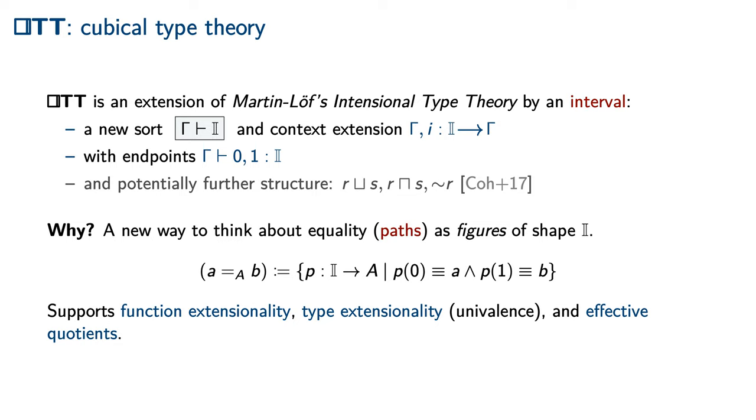Unlike Extensional Type Theory, however, Cubical Type Theory supports an additional extensionality principle for the universe of types itself. In particular, two types are identified by cubical equality exactly when they are equivalent or isomorphic in an appropriate sense.